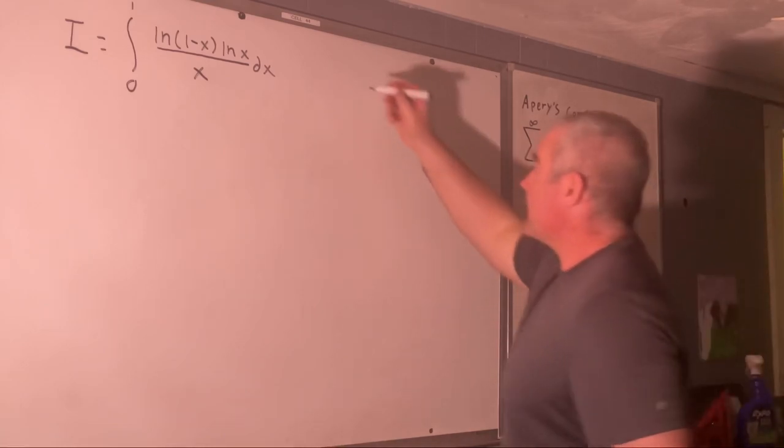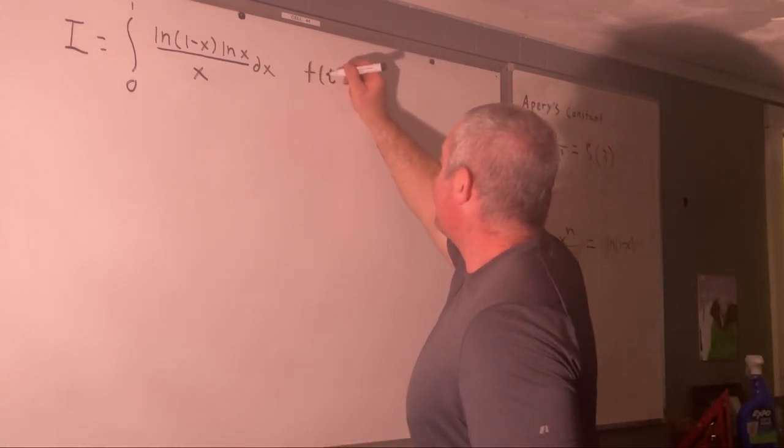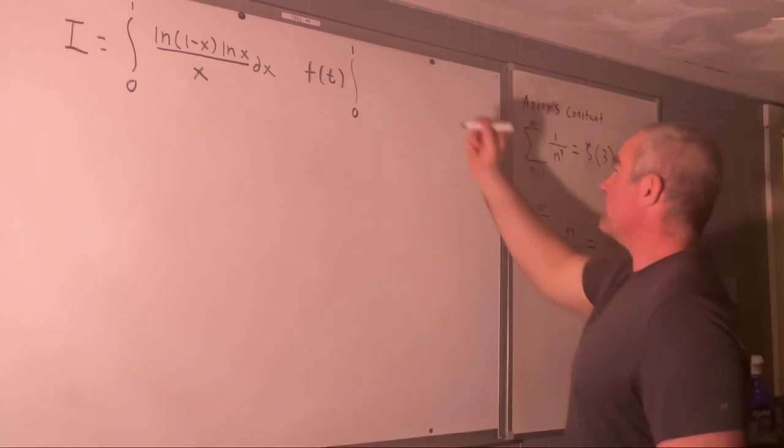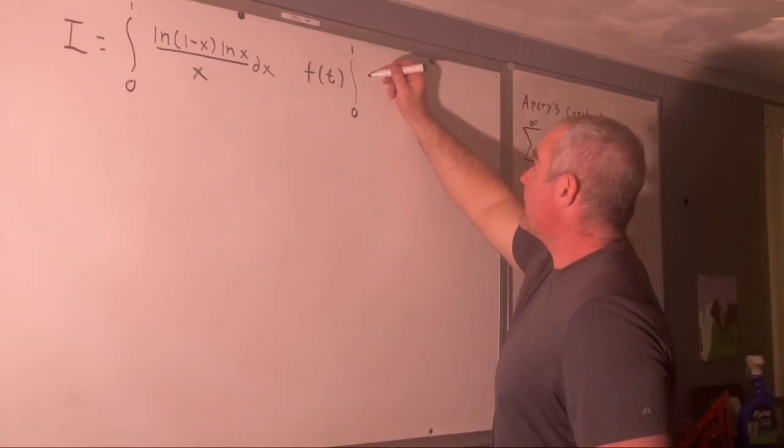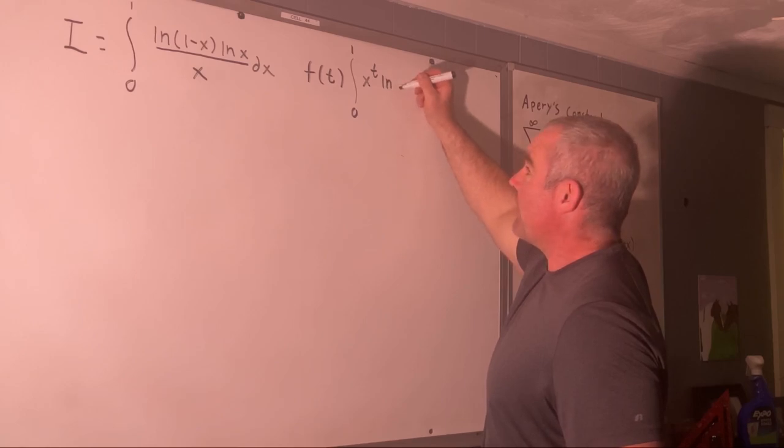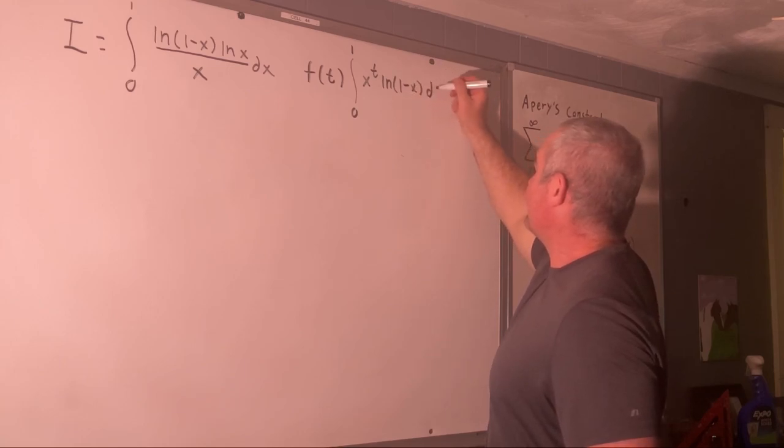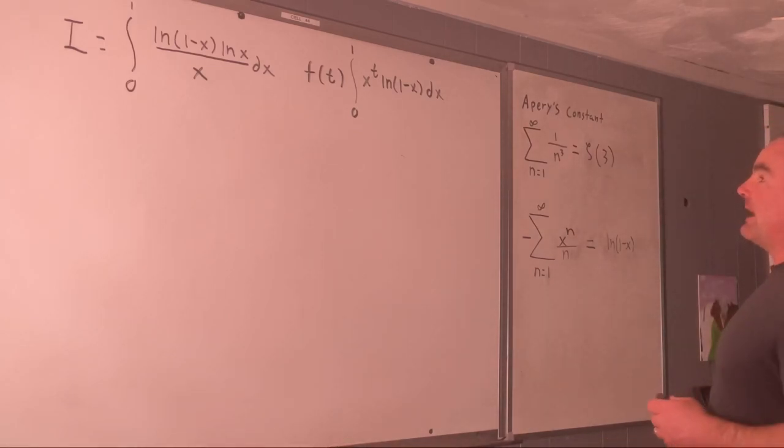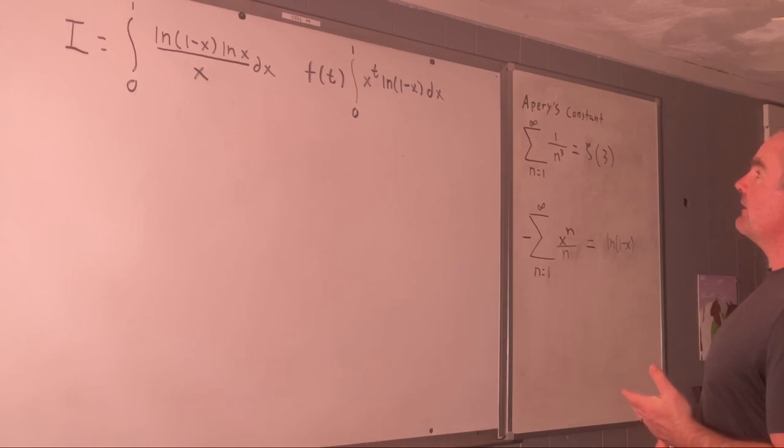And now we will create a function of T like this. It will be equal to the integral from zero to one of X to the T times the natural log of one minus X DX. And that converges.